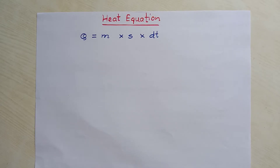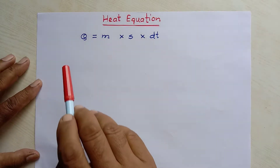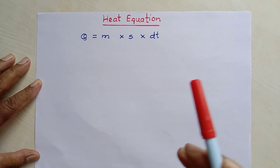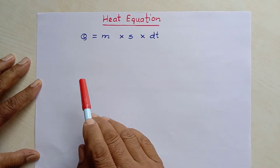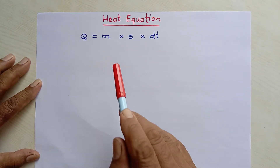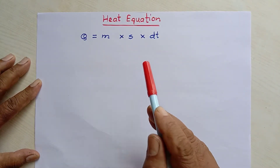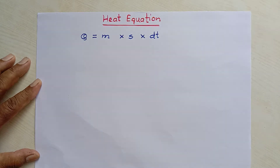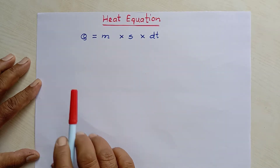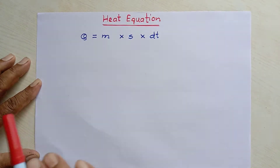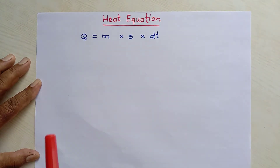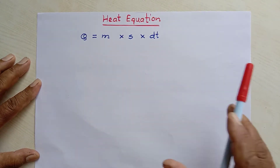Today I am talking about the heat equation. Symbolically we can write the heat equation as q equal to m into s into dt. This is the symbol which represents the heat equation.